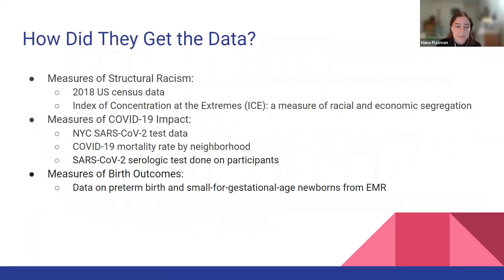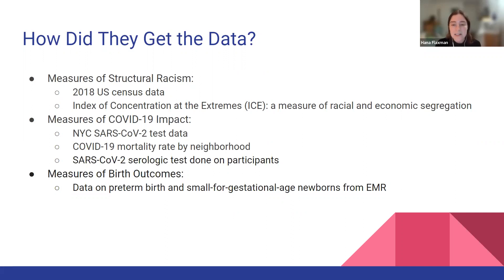They also looked at adverse birth outcomes and categorized all of these things by zip code. You might be thinking: how did they get all this data? Something like structural racism seems like a nebulous concept that we might have heard of, but how do you actually quantify that in a research setting? One of the ways they measured structural racism was just looking at U.S. census data, which showed the racial makeup of different areas and neighborhoods, as well as people's economic and employment status.